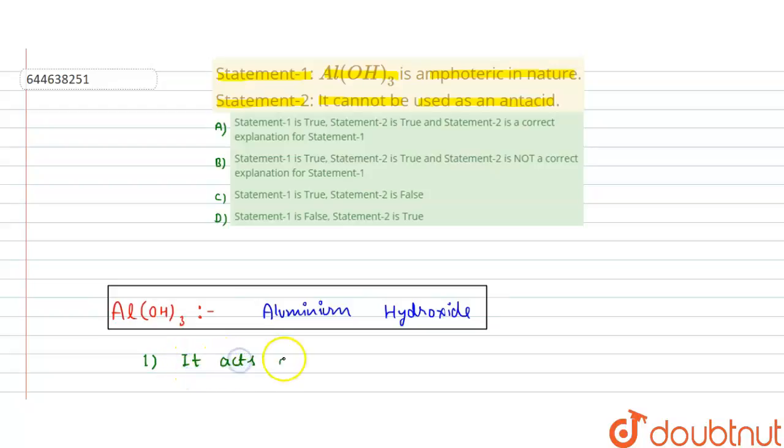It acts as an acid and base. So if it acts as acid and base, that means this is amphoteric in nature. So statement 1 is true. Statement 1 is true.